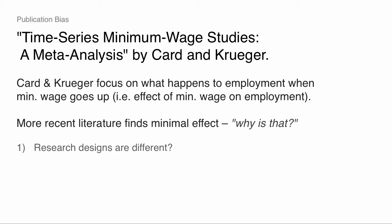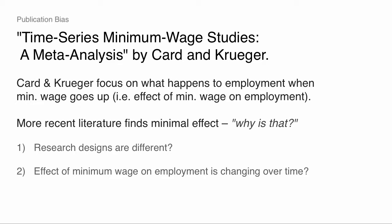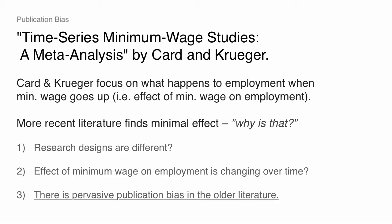Why is that? One possibility is the research design is different — you think you're estimating the same thing but you're actually estimating something different. Another possibility they bring up is that maybe effects are changing over time. Maybe back in the 70s when the first studies came out there was a certain effect of the minimum wage, but now in the 90s it's different — the economy changed, other policies changed, the labor market changed. But their preferred explanation, what they're going to come to and show a lot of evidence for, isn't that at all. They're basically going to argue that there's just pervasive publication bias in the older literature.